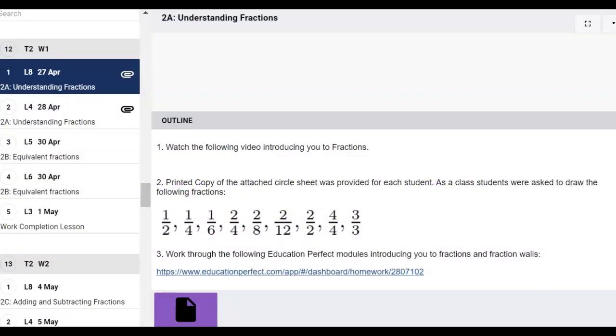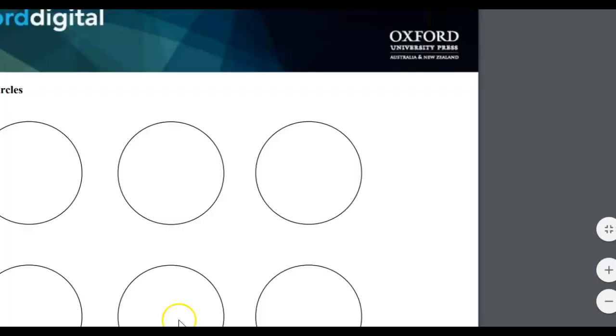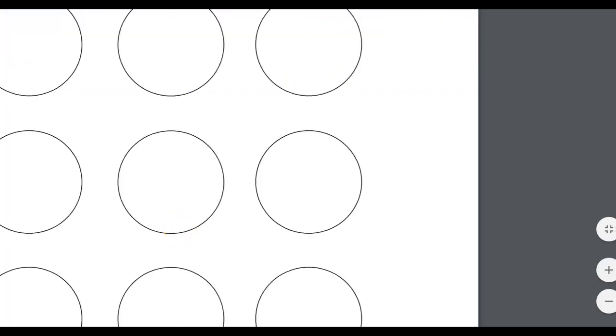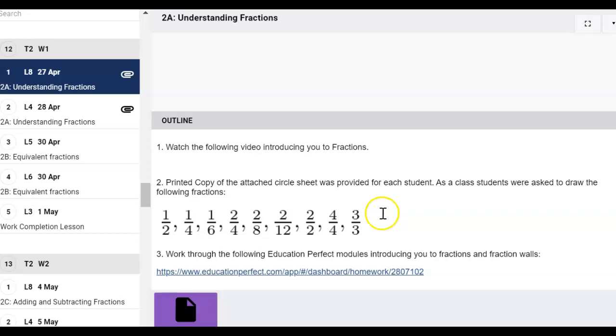First you're going to be watching this video, then if you have a printer you might want to open up this attached PDF and print off the sheet because we're going to be using that in a little activity later on in the lesson, and then we'll end the lesson by looking at a few Education Perfect modules.